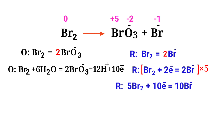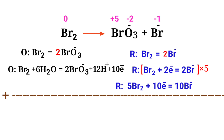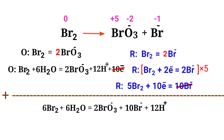Now add both half reactions together and cancel any identical terms appearing on both sides. Then divide the resulting equation by a coefficient of 2 to simplify.